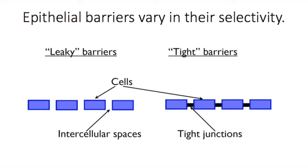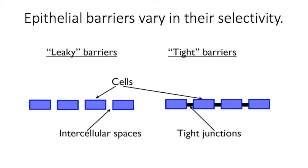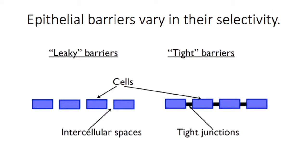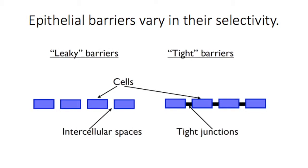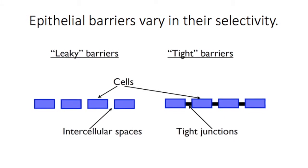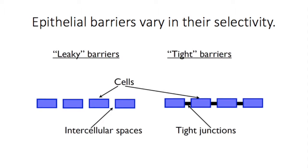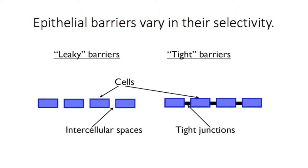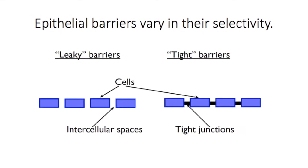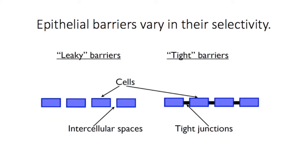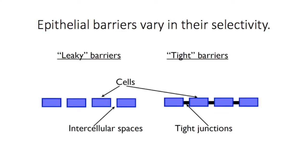The cells of tight epithelial barriers are joined together by tight junctions, which forces ions and molecules to pass through the epithelial cells, thereby providing a mechanism by which it can be regulated which ions and molecules are actually able to move across to the other side. Leaky barriers, on the other hand, have gaps between the epithelial cells through which most ions and molecules can pass relatively freely without much regulation.